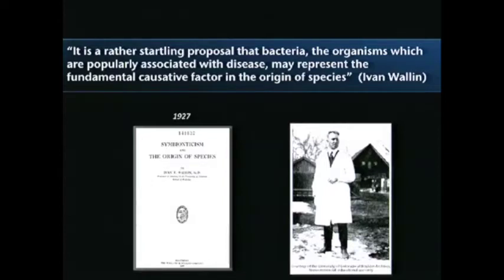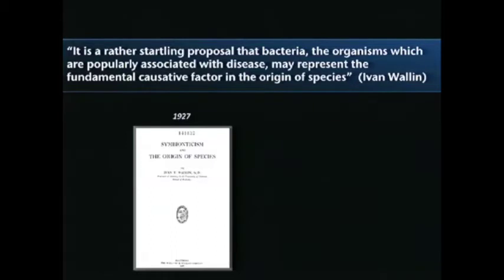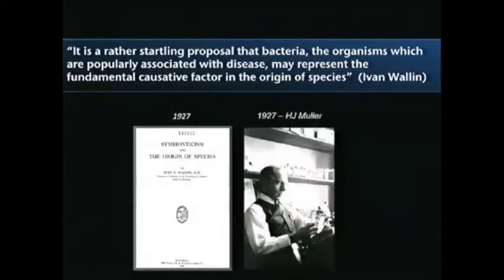So what happened to Wallin? Why don't many of us know about him? In the same year he published his book, H.J. Muller published his famous Drosophila x-radiation studies showing that transmutability of organisms could be mapped to nuclear chromosomes. The foundation for the modern synthesis was commencing, where Darwin's focus on natural selection now seamlessly fit with the observation that nuclear genetics could explain how varieties form — mappable not to bacteria, as Wallin claimed, but to the nuclear genome.